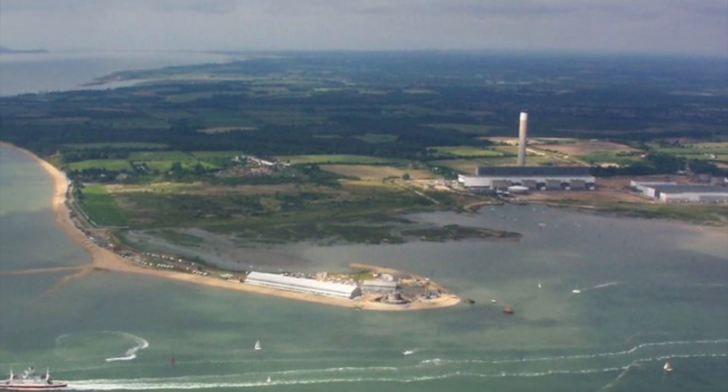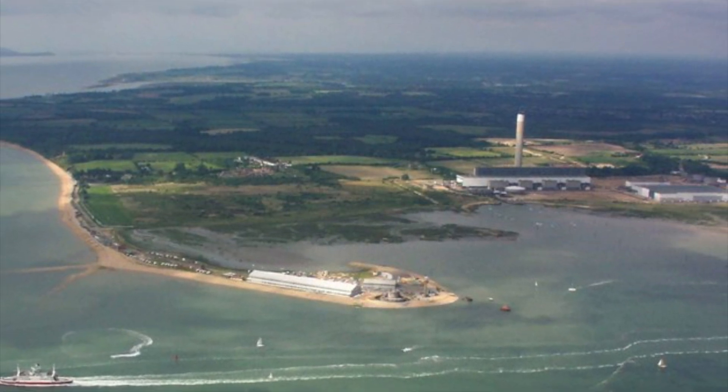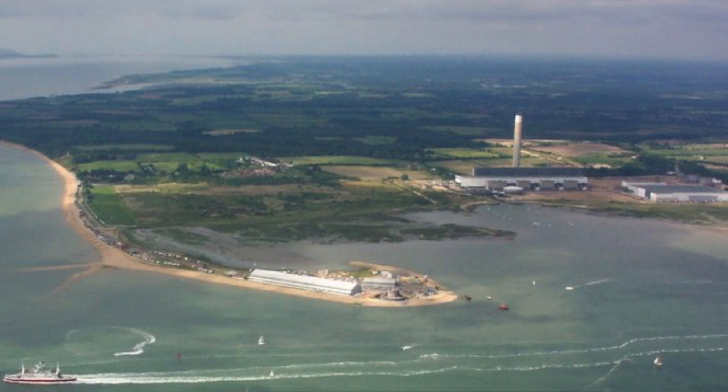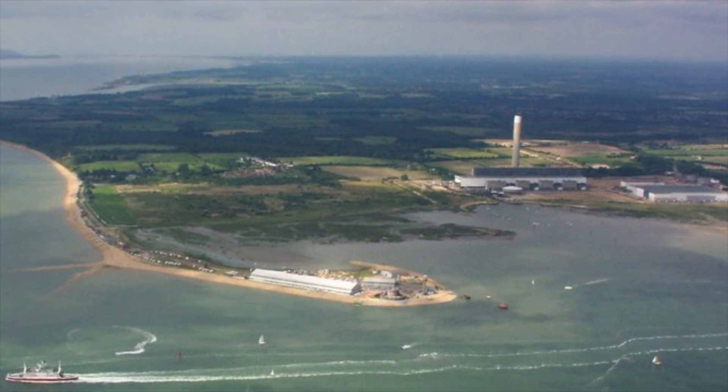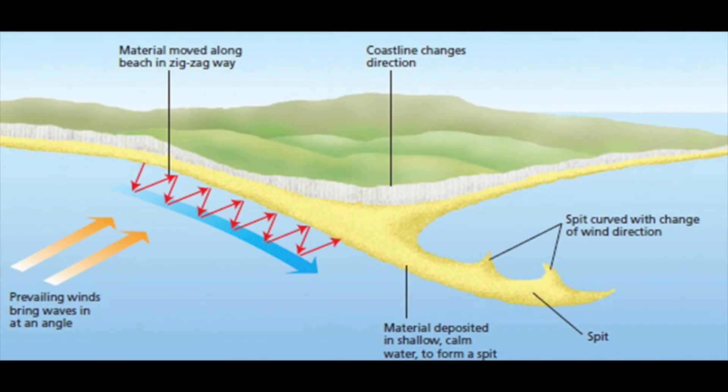To summarize: a spit is mainly formed because of the change in direction at the headland. Behind it forms a salt marsh, and when there is a change in wind direction, the spit can curve. That's everything you need to know about spits. Thank you for watching — if you have any questions, comment below and please visit my website. Goodbye.